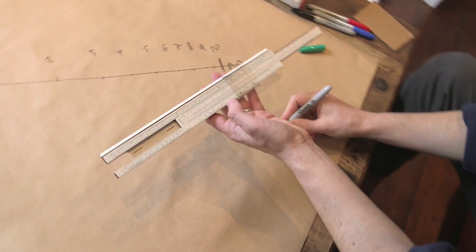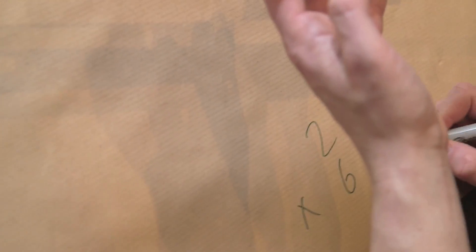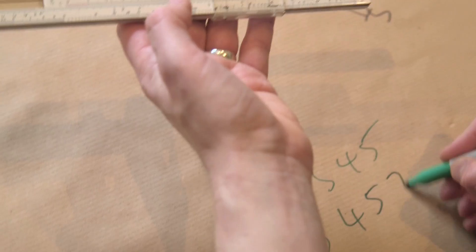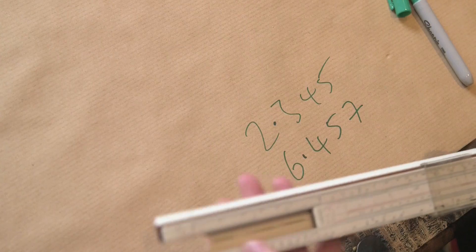Just say we wanted to multiply, say 2,345 times 6,457. Okay, what we do, we turn that into 2.345 times 6.457, and let's do the sums.